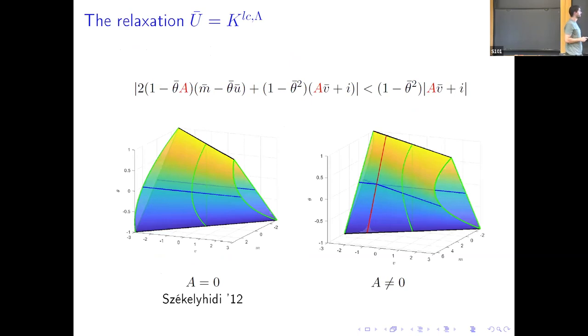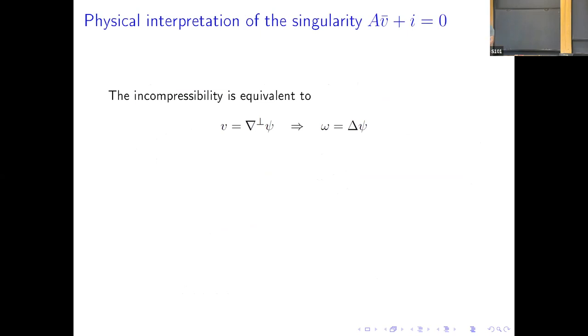And, surprisingly, in this case, where capital E is different to zero, there is a, this red set in the convex hull, that makes impossible to apply the convex integration method for some velocities, the velocity that makes this quantity equal to zero. And, surprisingly, this has a physical meaning.